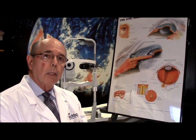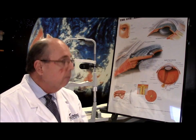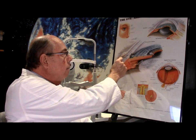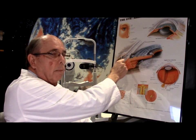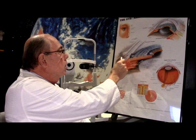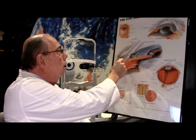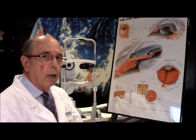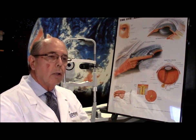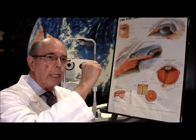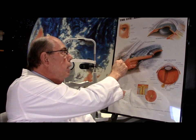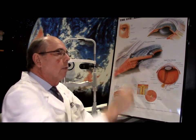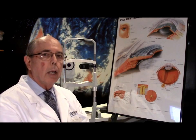First we need to know what we're talking about. The white part of your eye is called the sclera, and over top of that sclera is a coating called the conjunctiva. In between those two layers is the episclera, where there's some really fine tissue just between, on top of the sclera.